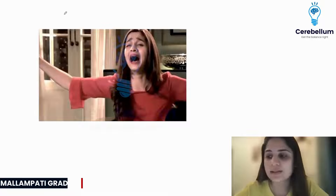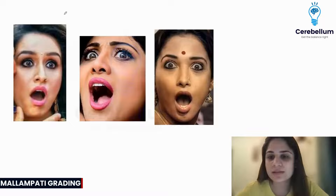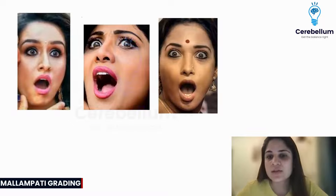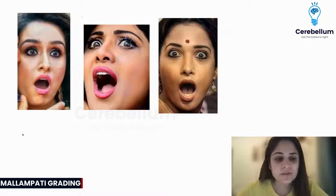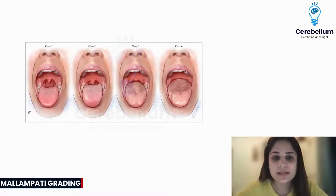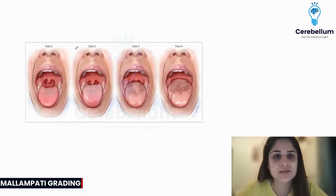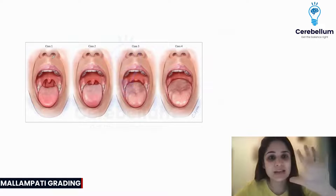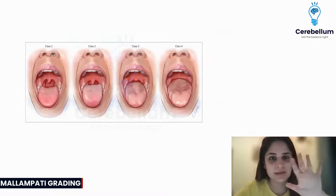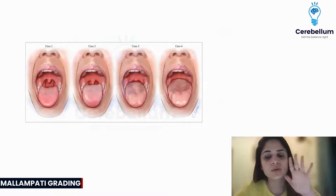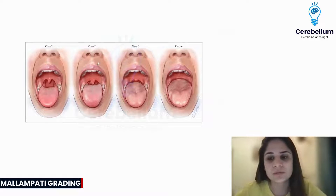What is our next important thing that you need to know that keeps coming in the exam again and again? This is nothing but Mallampati grade. Mallampati comes very, very often in the exam and they say that there are 4 Mallampati classifications. But actually, there are 5 Mallampati classifications — other than 1, 2, 3, 4, there is also a Mallampati class 0.